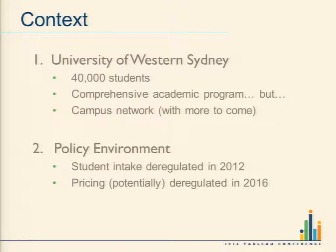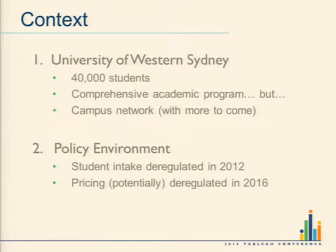Just a bit about the university so you know who we are. We've got about 40,000 students and 3,000 staff. We have five or six campuses, depending how you count them, in a sort of ring around the western edge of Sydney. To drive from our northernmost campus to our southernmost campus in the Sydney metro area is probably an hour and a half drive, so there's quite a geographic spread but it's all within one metro area, which creates very interesting complications for us.